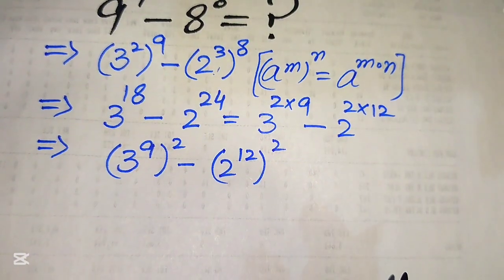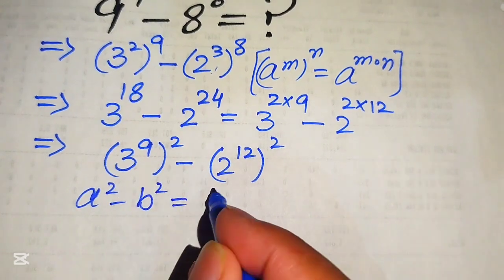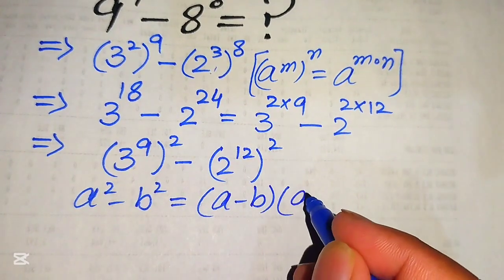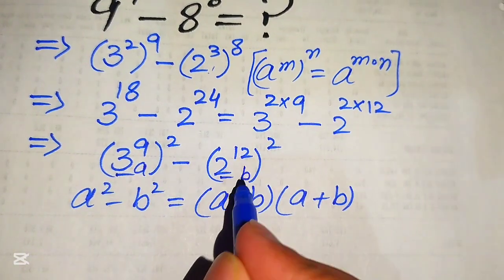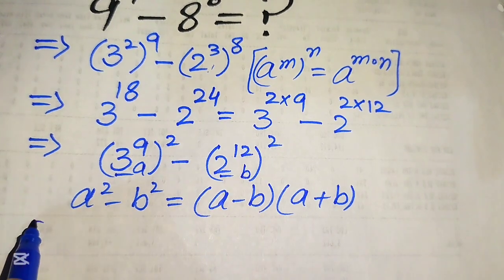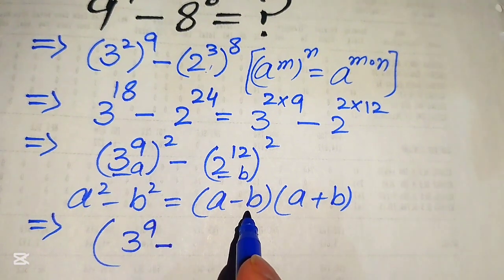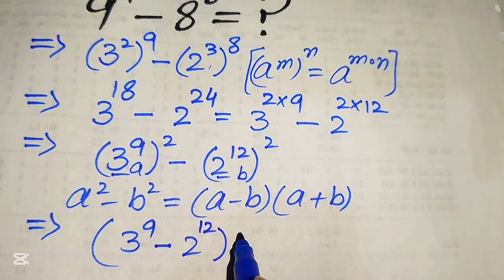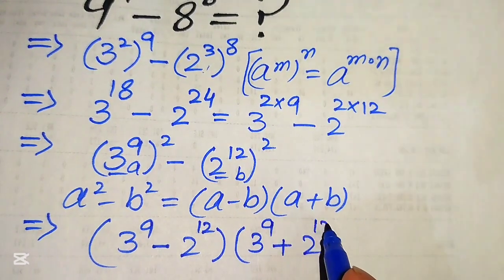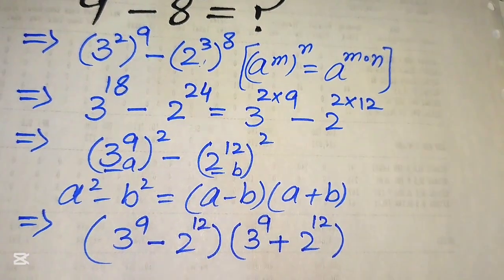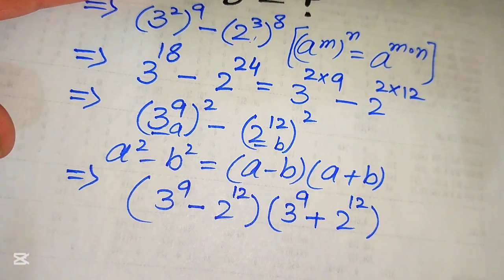We now apply the algebraic formula: a squared minus b squared equals (a minus b) times (a plus b). Here the base of the first squared term is our a, which is 3 to the power of 9, and b is 2 to the power of 12. So we write the expression as (3^9 minus 2^12)(3^9 plus 2^12). In the next step we find the values of 3 to the power of 9 and 2 to the power of 12.